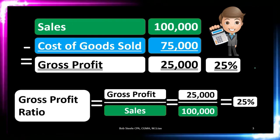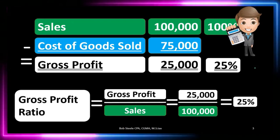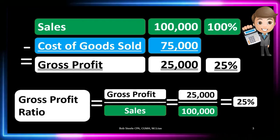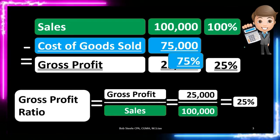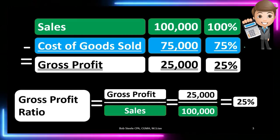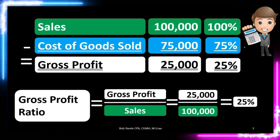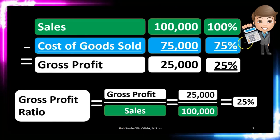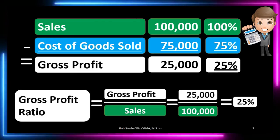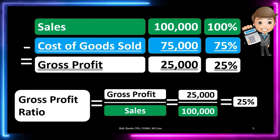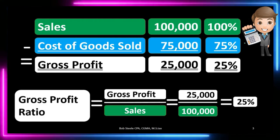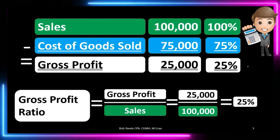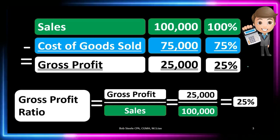To put that into context: 100% of sales is $100,000 divided by $100,000. The cost of goods sold is $75,000 divided by $100,000, which is 75%. So 100% of sales minus the 75% being used up through the cost of inventory leaves us with the gross profit percent — the gross profit ratio. Thank you.